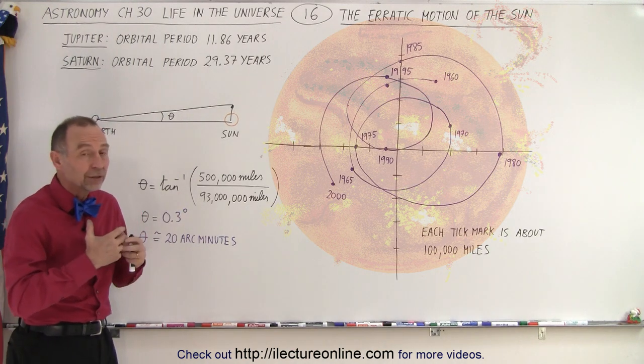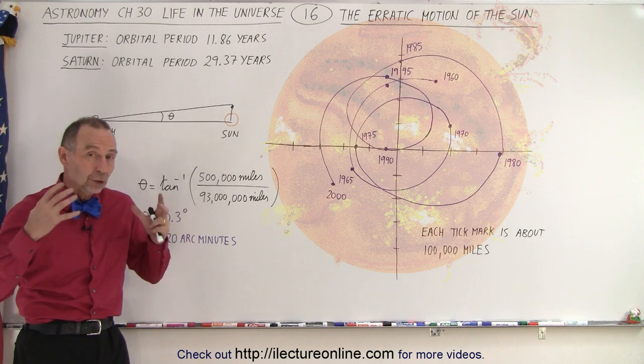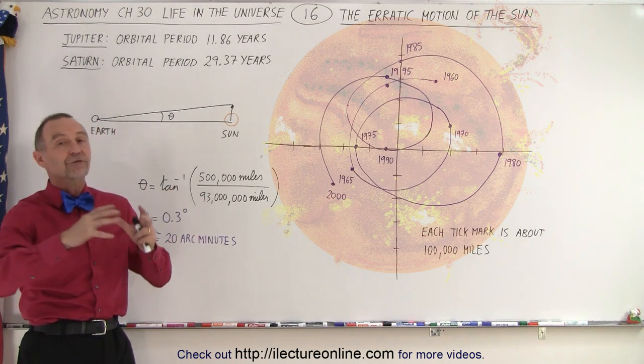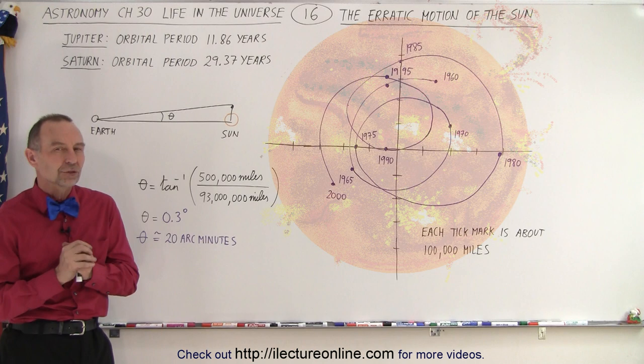So here's an example where if the planets are big and they're relatively close to the star, the motion would be very erratic. If they're far away, then it's much more difficult to detect.